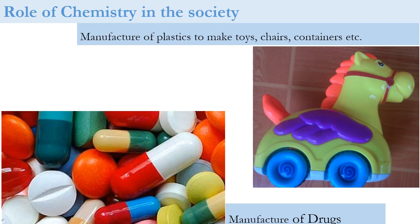Next, chemistry plays a role in the manufacture of plastics. Plastics are used to make toys, chairs, containers, roofs, computers, televisions, and many more items. There are so many uses of plastics — for example, this little toy that you can buy for your child to play with.